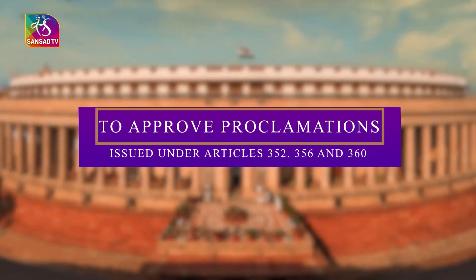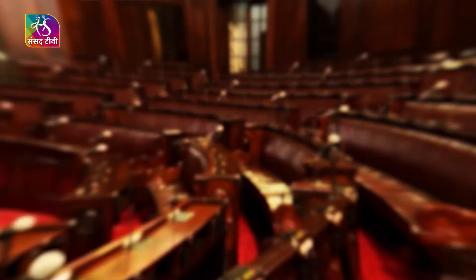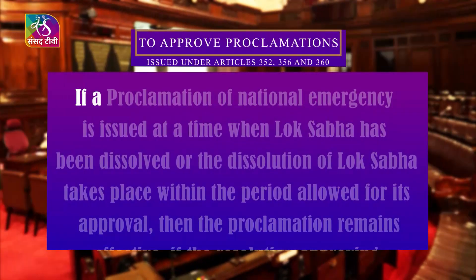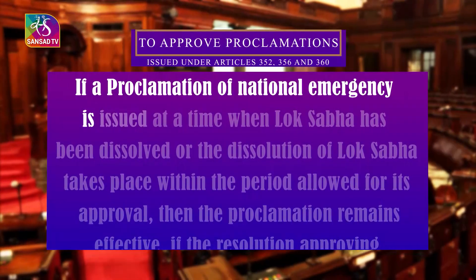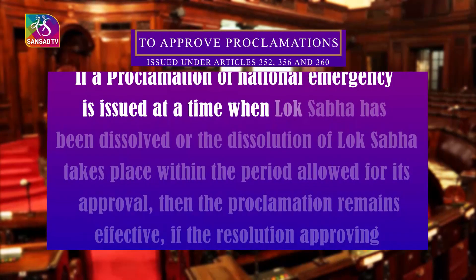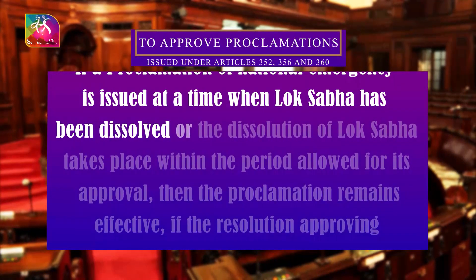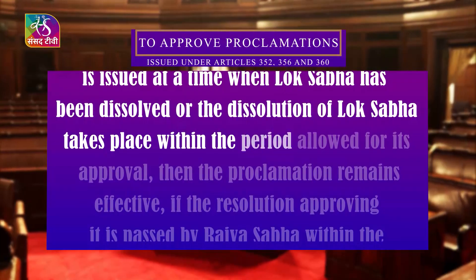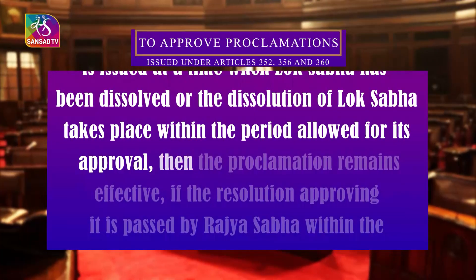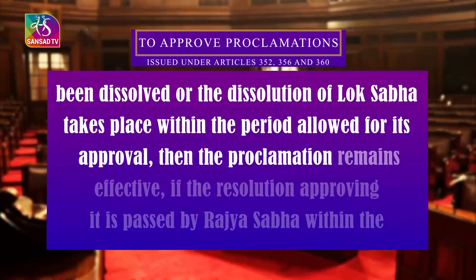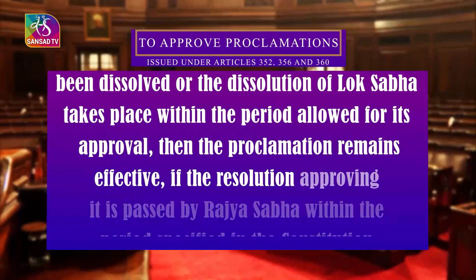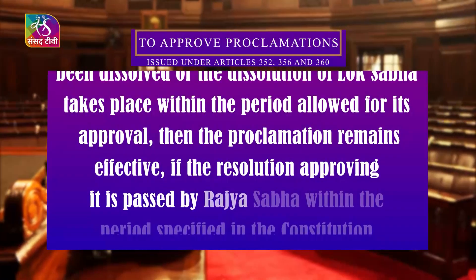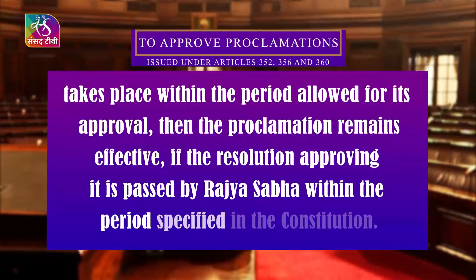To approve proclamations issued under Articles 352, 356, and 360. If a proclamation of national emergency is issued at a time when Lok Sabha has been dissolved, or the dissolution of Lok Sabha takes place within the period allowed for its approval, then the proclamation remains effective if the resolution approving it is passed by Rajya Sabha within the period specified in the Constitution.